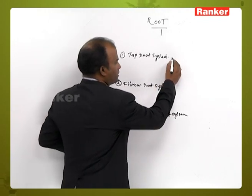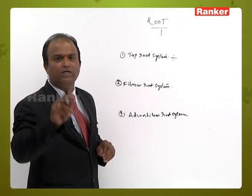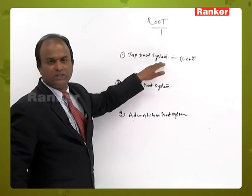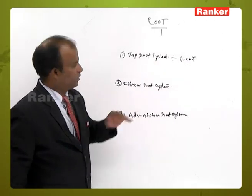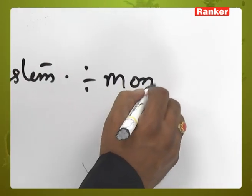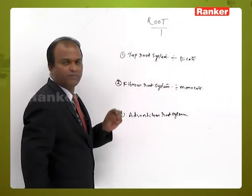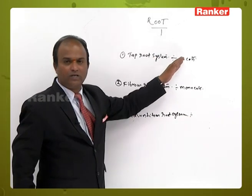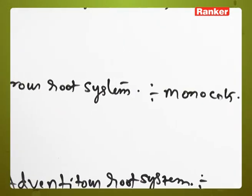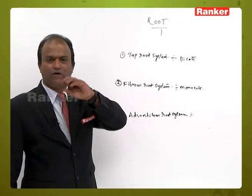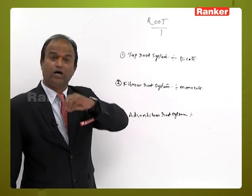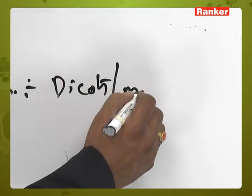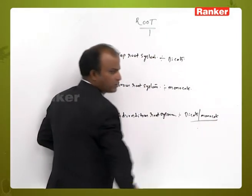The tap root system can be seen only in dicots. The fibrous root system can be seen only in monocots. The adventitious root system can be seen in both dicots and monocots.